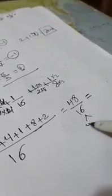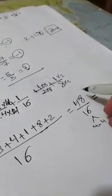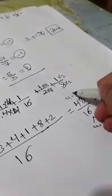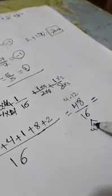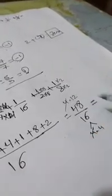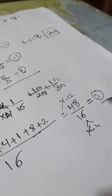16 is 4 × 4 and 48 is 4 × 12. So we can cancel 4 with 4. 12 divided by 4 is 3.